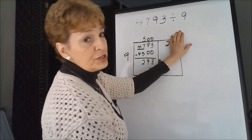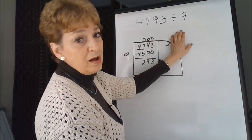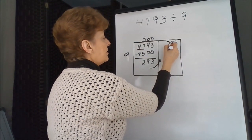How many times does 9 go into 2? Well, 2 is too small, so we've got to move over and look at 29.